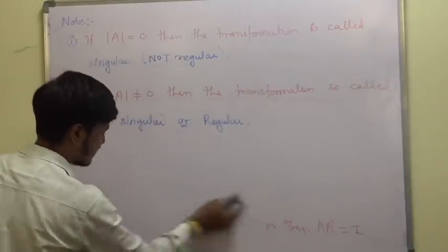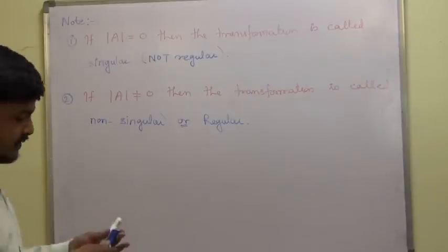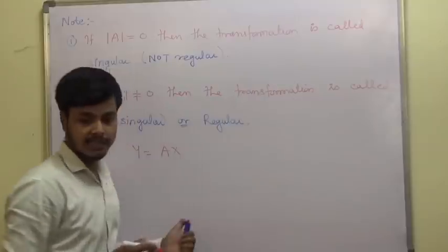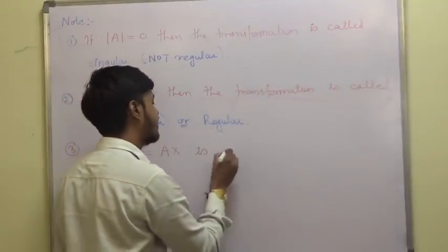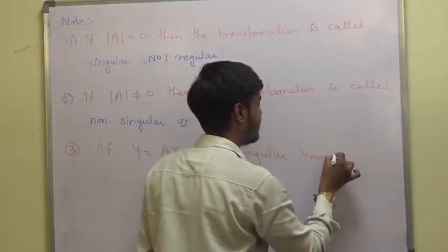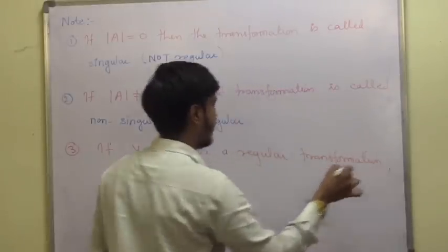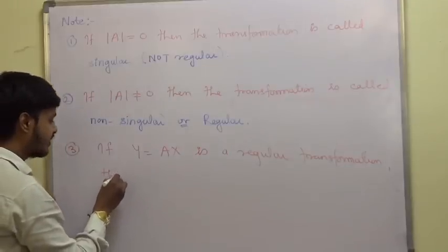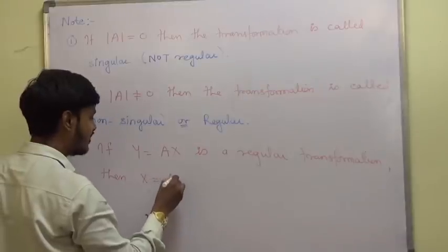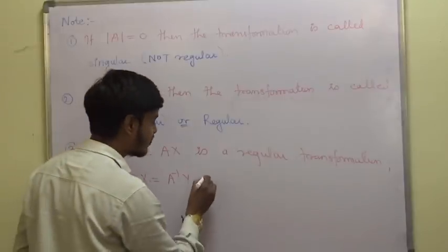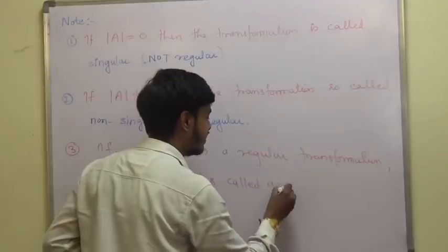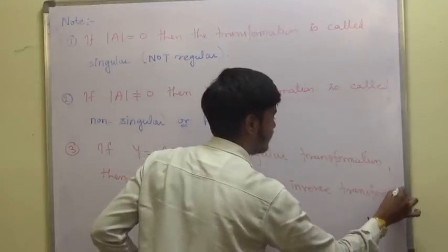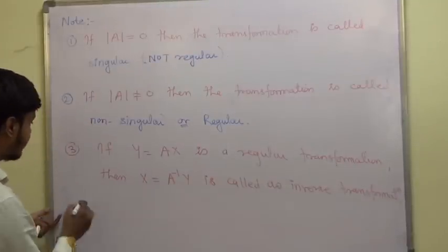Note 3: if y = Ax is a regular transformation (meaning determinant is not equal to 0), then x = A^(-1) · y is called the inverse transformation.